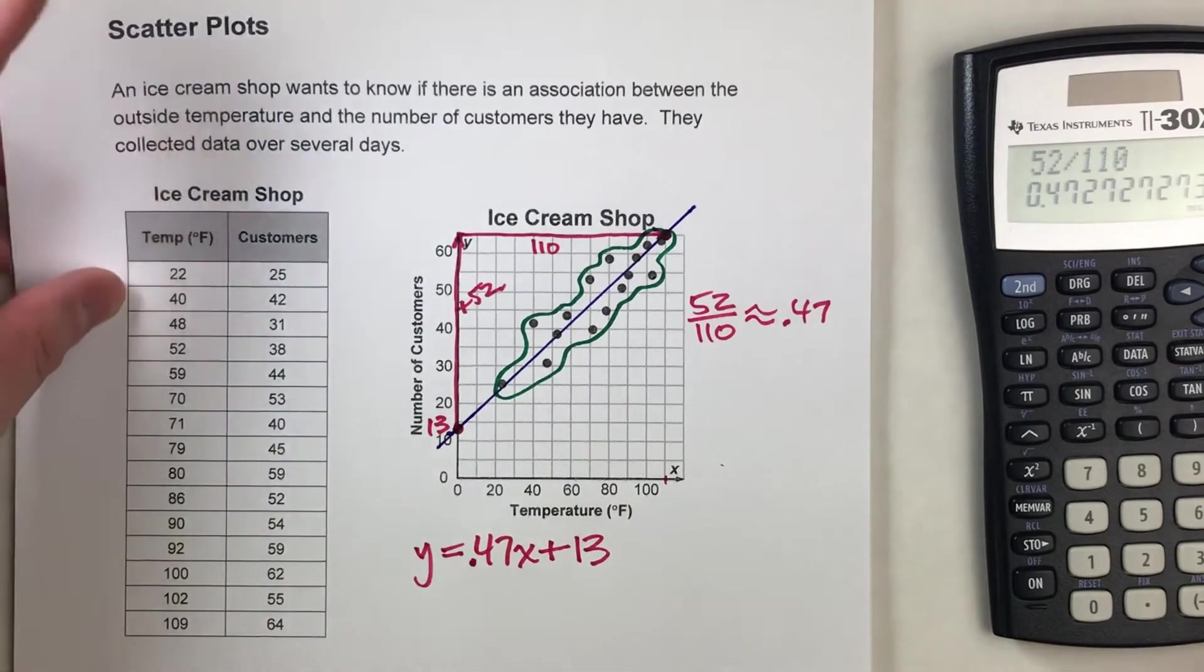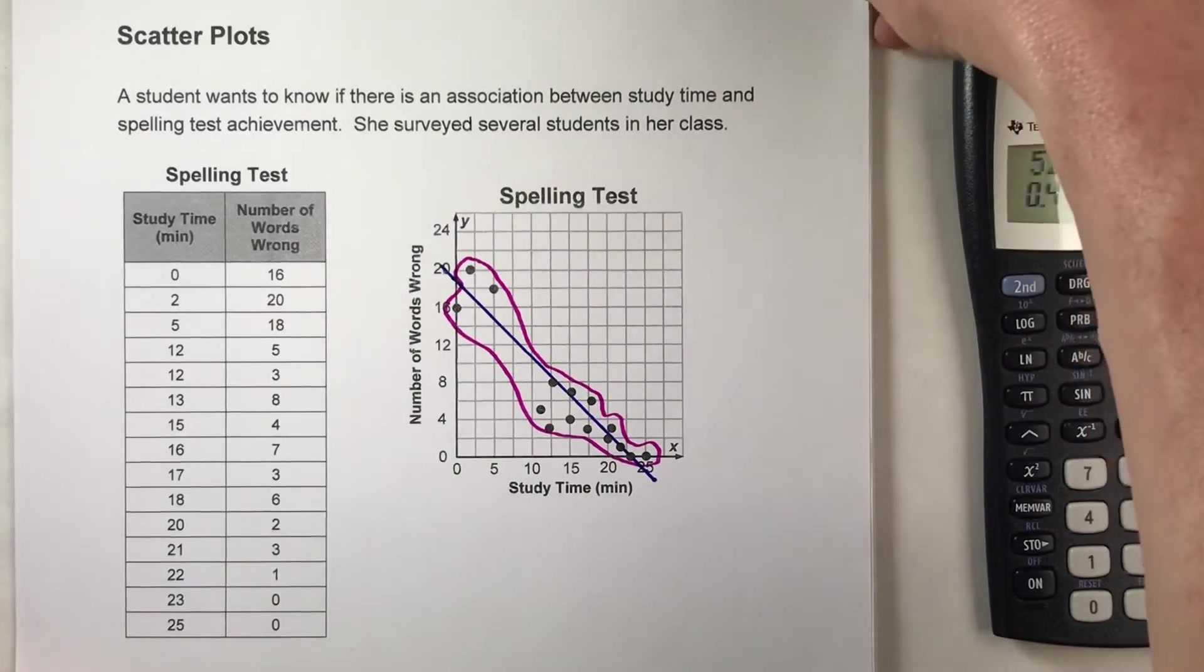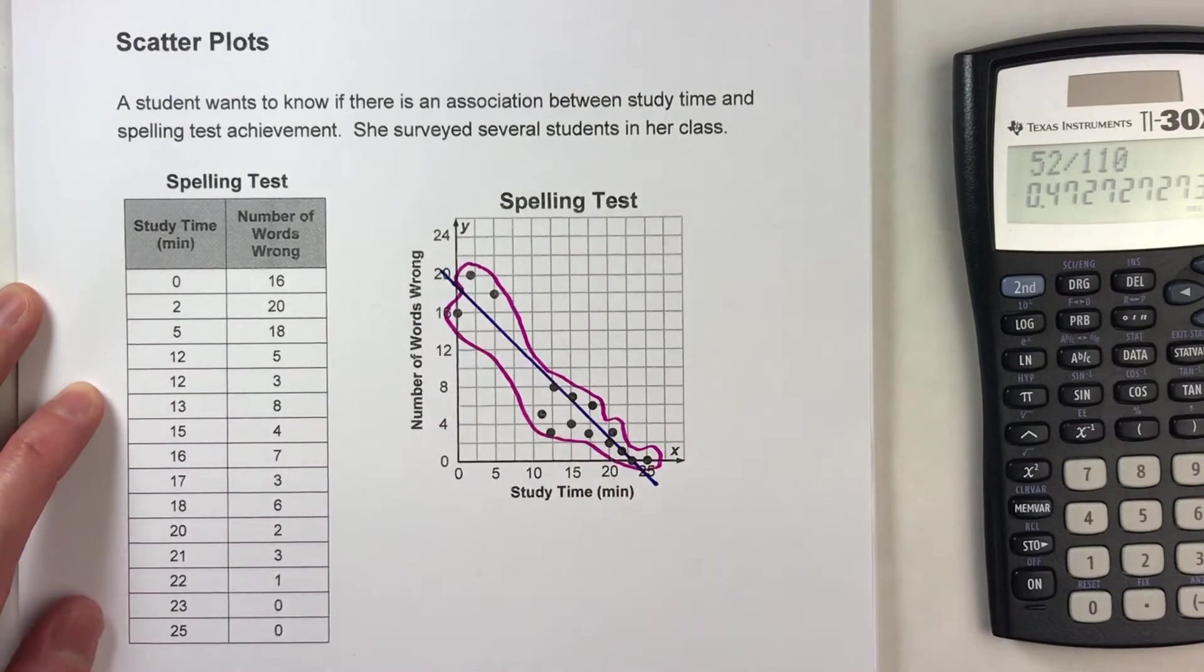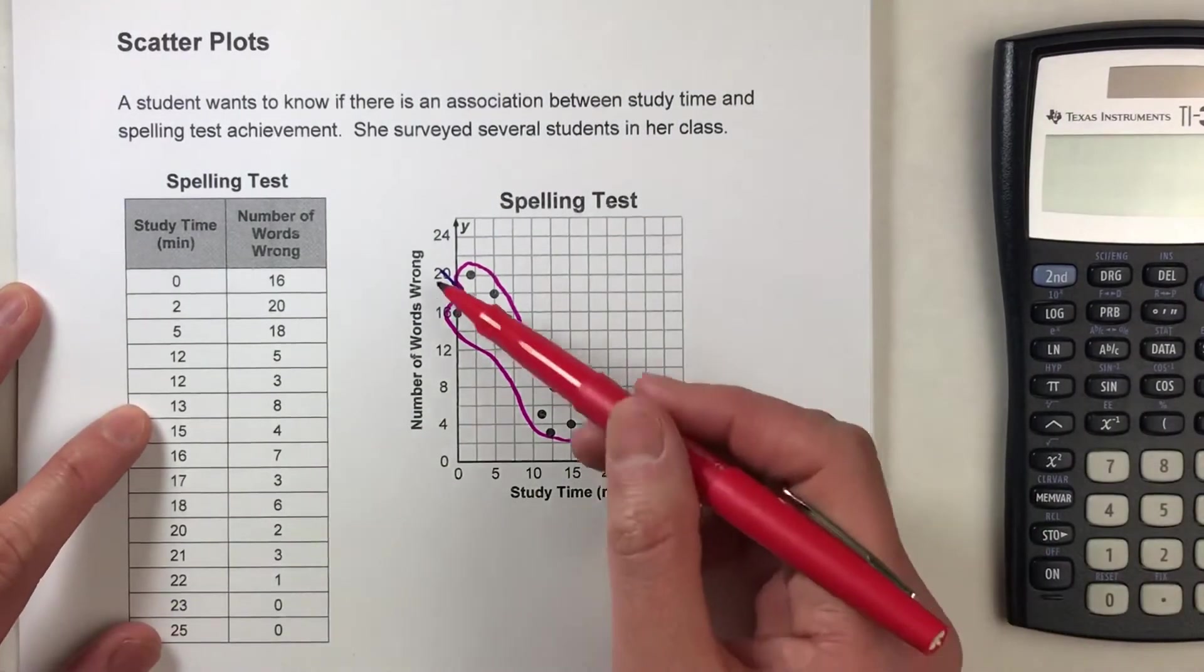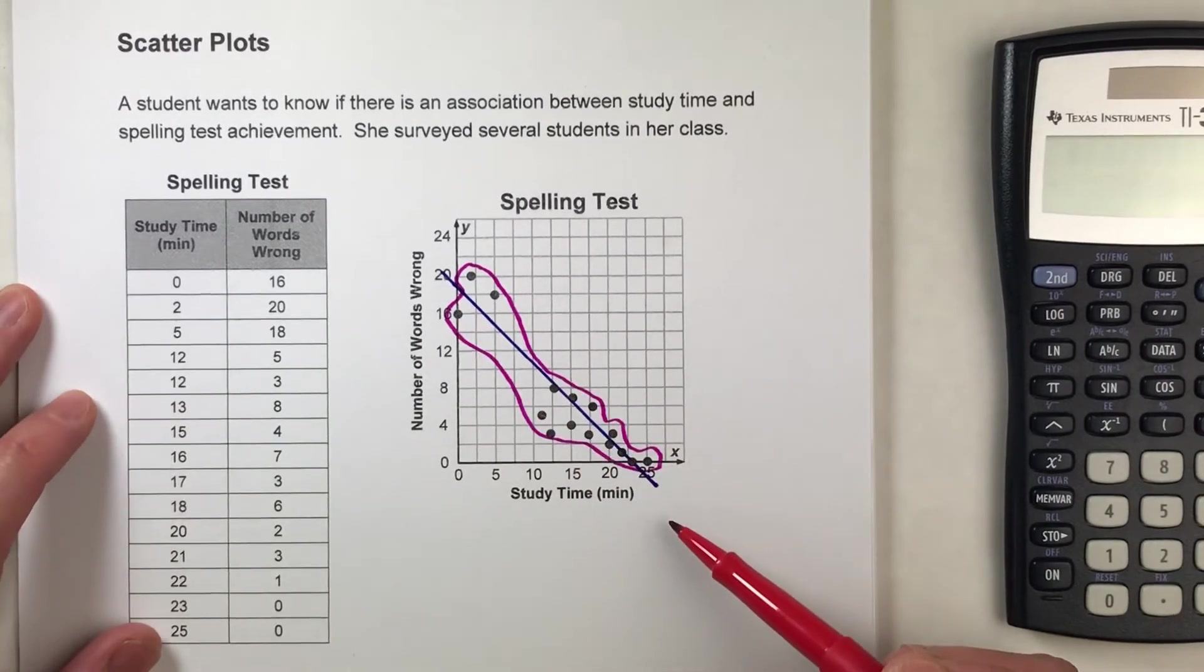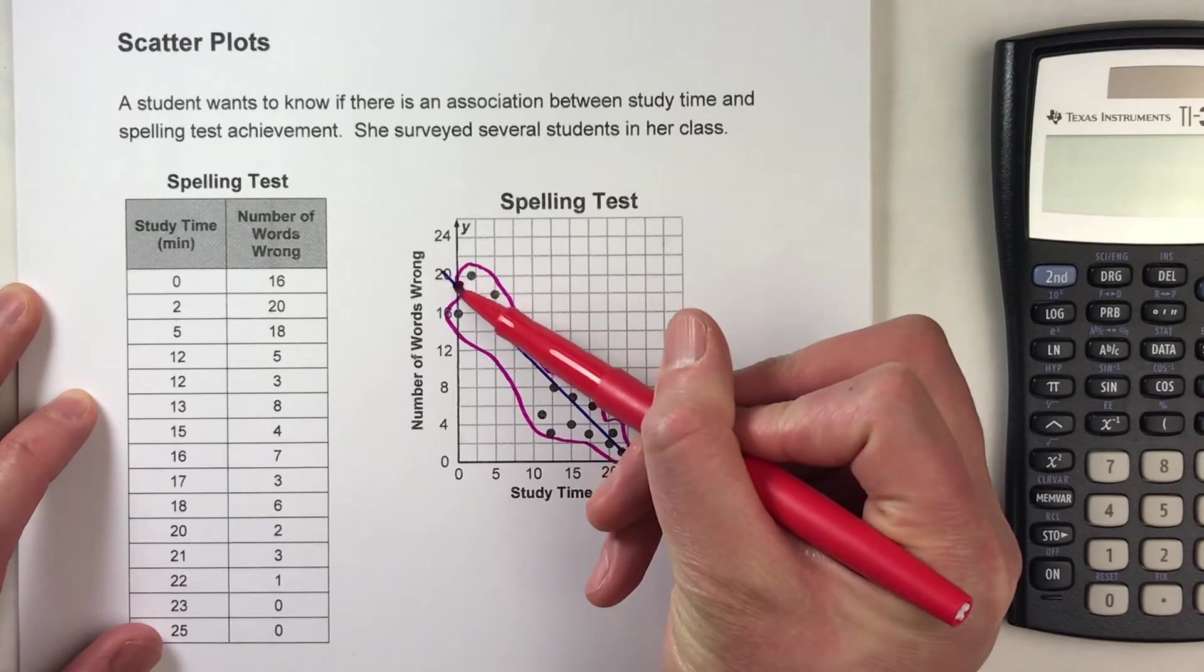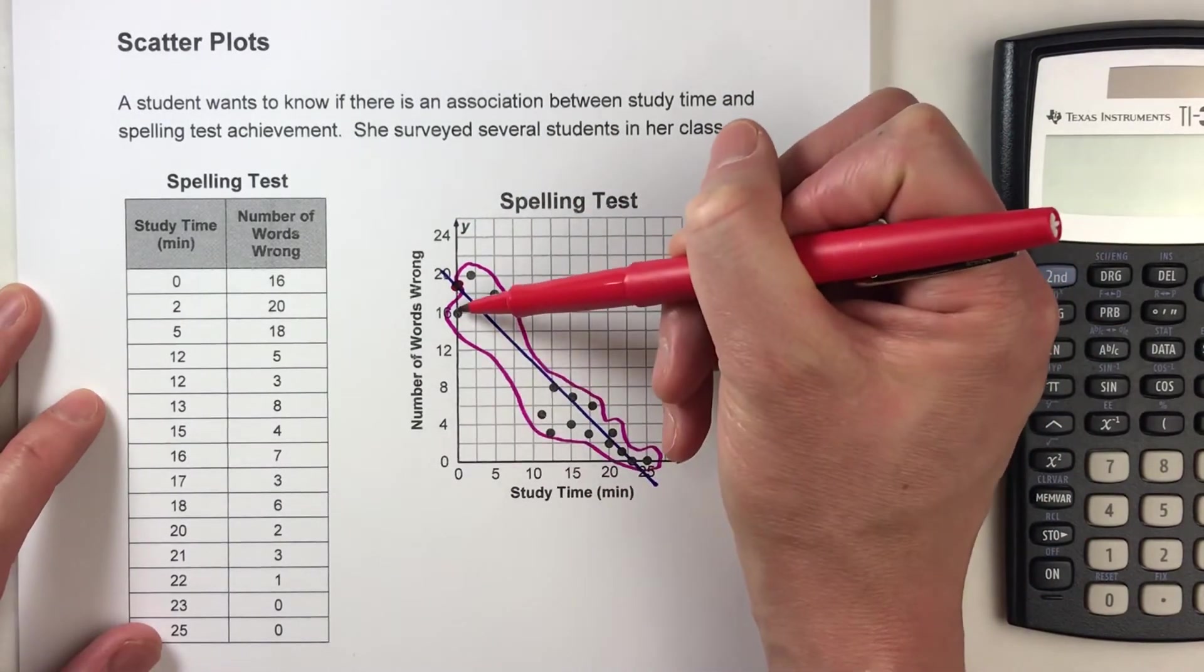So for the second example, this is yet another scatter plot that I worked on in a previous video. So if you want to see how I drew that trend line in, make sure you click on that link down below. But let's go ahead and see if we can find the equation for this trend line here. So my y-intercept is here, which on this scale,